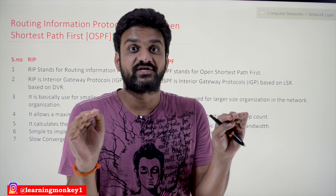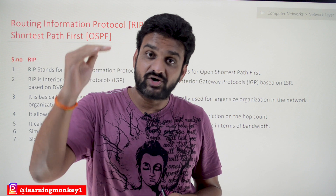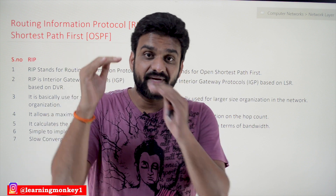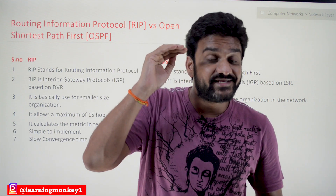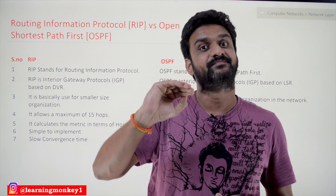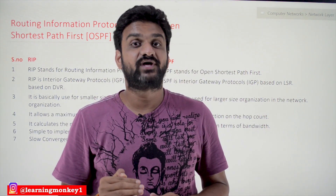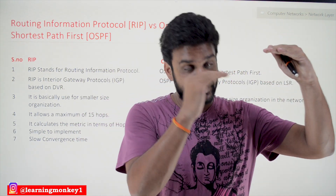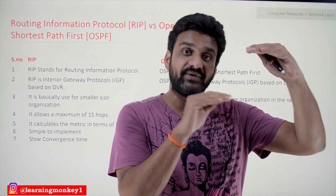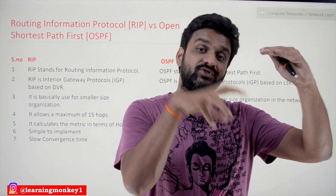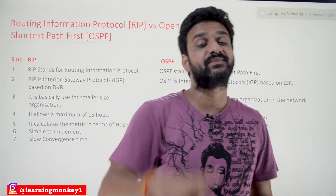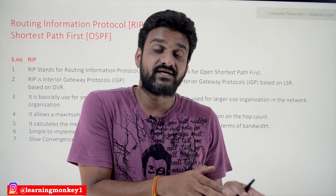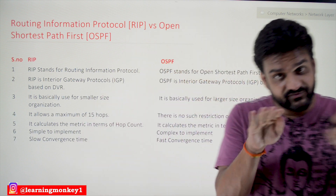It's important to understand the thin line of difference: RIP is a protocol — a set of rules — and those rules are based upon the concept of Distance Vector Routing, which is implemented using the Bellman-Ford algorithm. Similarly, OSPF is a protocol whose rules are designed based upon Link State Routing, implemented using Dijkstra's algorithm. A protocol and an algorithm are distinct concepts.